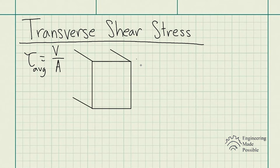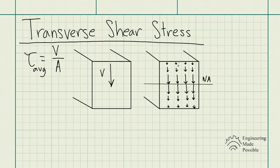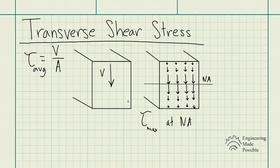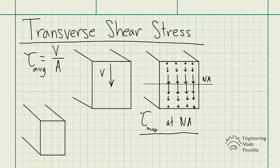Let me go ahead and draw a beam here. For this beam at the cross-section, we're seeing that shear force downward at this beam. When it comes to shear stress, the way it's actually distributed within the cross-section looks like this. We can also see the neutral axis drawn here. The shear stress is actually the least at the top and bottom; however, at the center, this is where you actually experience the maximum shear stress.